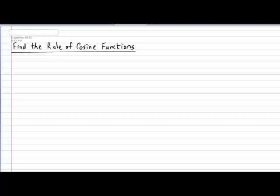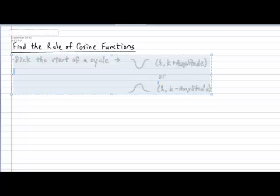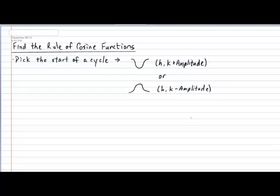The first of these steps is to determine where you would like to start your cycle. If you choose the start of a cycle which results in your cycle taking the shape of a valley, then your start point will be located at (h, k+amplitude). However, if you pick the start of a cycle which will result in your cycle having the shape of a mountain, then your start coordinate will be located at (h, k-amplitude).